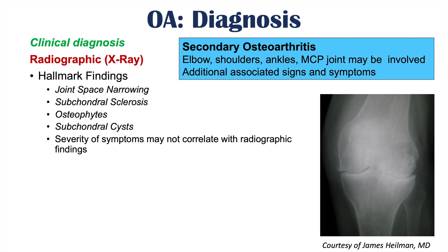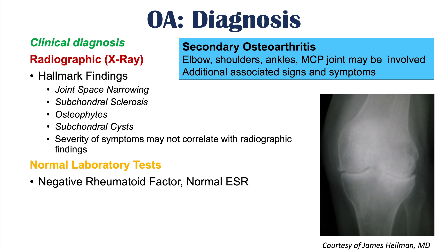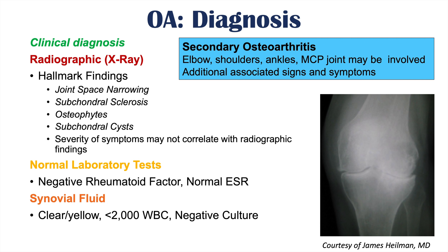Laboratory tests are typically normal in osteoarthritis, with negative rheumatoid factor and a normal ESR (erythrocyte sedimentation rate). Synovial fluid analysis is essentially normal — clear or yellow in color, fewer than 2,000 white blood cells, and a negative culture with no bacteria present.